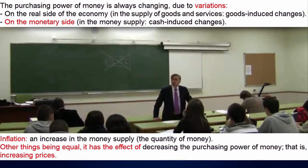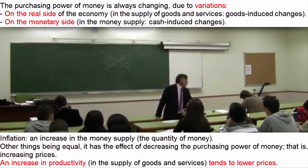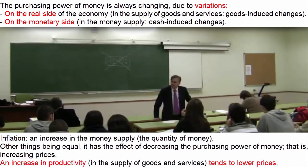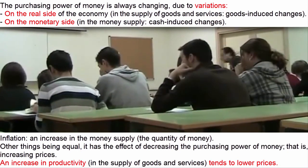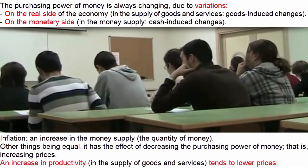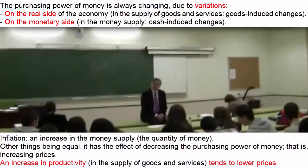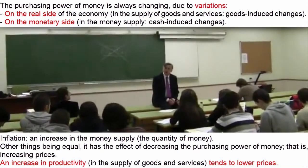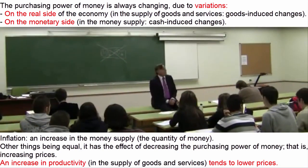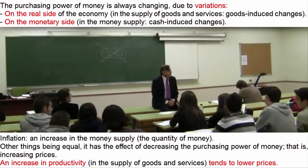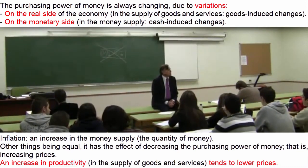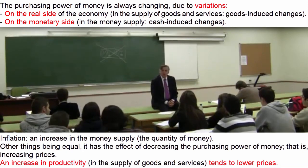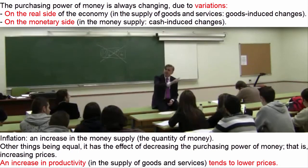I say that, other things being equal, an increase in the quantity of money pushes up prices. But only other things being equal, because an increase in the quantity of money does not necessarily lead to a rise in prices. Imagine that an increase in the quantity of money coincides with a large, simultaneous increase in the real productivity of goods and services — one effect offsets the other, and prices do not rise.